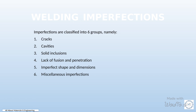The fourth group, lack of fusion and penetration, refers to incomplete bonding or joining between materials. The fifth group is imperfect shape and dimensions, which includes deviations from the desired form or size. The sixth group encompasses miscellaneous imperfections that do not fit into the previous categories. Understanding and addressing these imperfections is crucial in ensuring the quality and integrity of materials and structures.